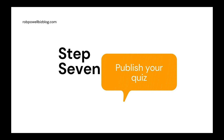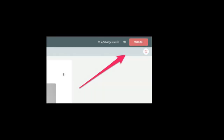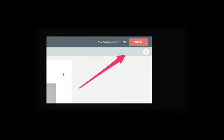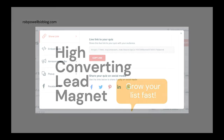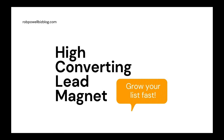Step seven: publish your quiz. Just hit Publish in the top right corner. You'll then see various options for taking your quiz live, including share link, embed code, pop-up, and Facebook ad. And that's it — you've now created a high-converting lead magnet that should help grow your list fast. I hope this video was useful. If so, please like and share, and I'll see you next time.